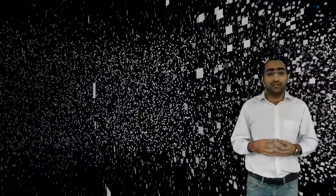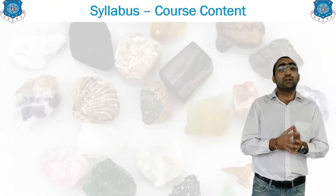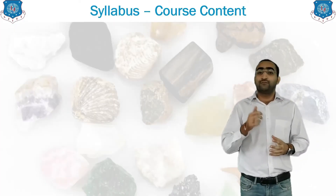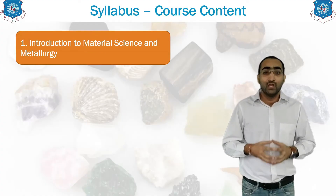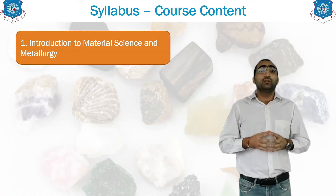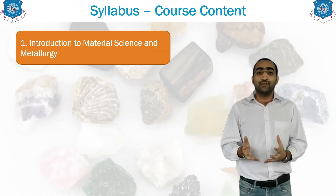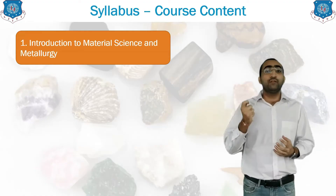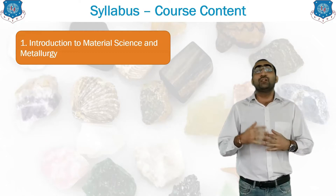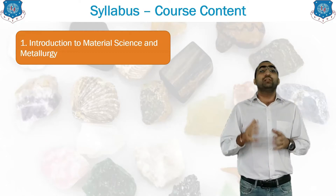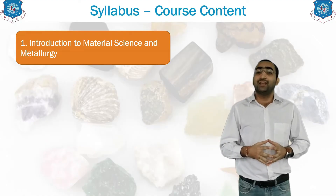Now let us go for the introduction to your syllabus — which are the different units included. The first unit is the introduction to Material Science and Metallurgy. This chapter includes the different types of materials, how materials are classified, how any material is to be selected, which factors are responsible, and what are the properties of metals and non-metals. All that is included in unit number one.